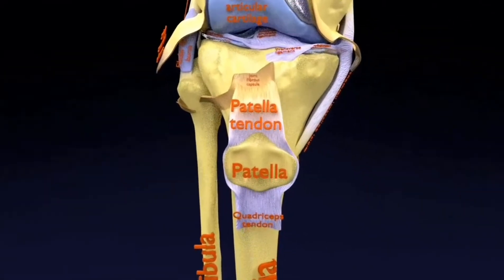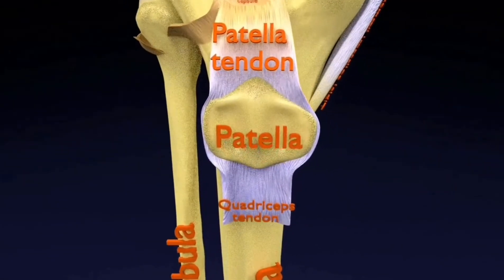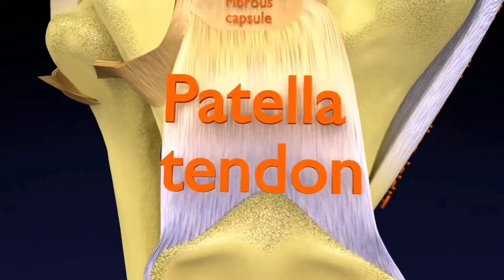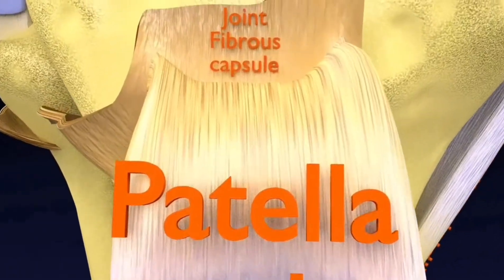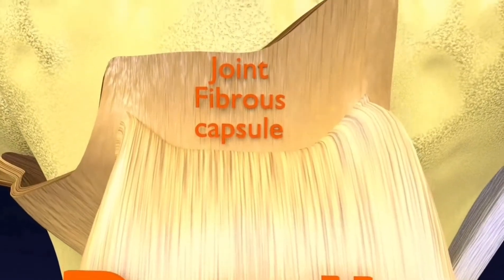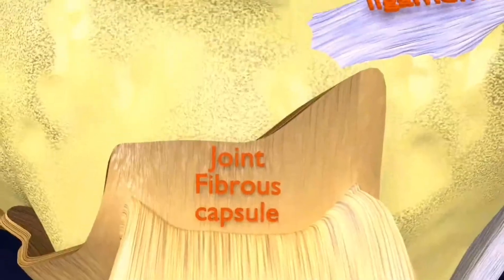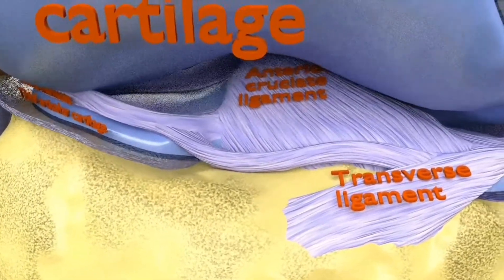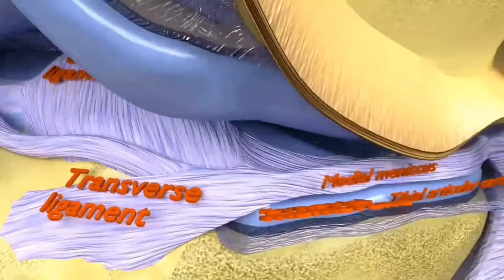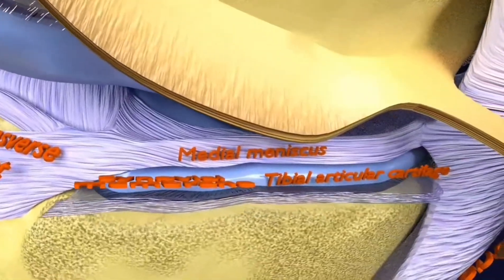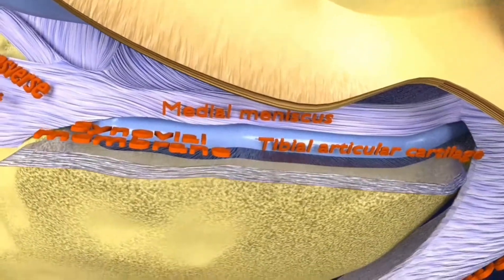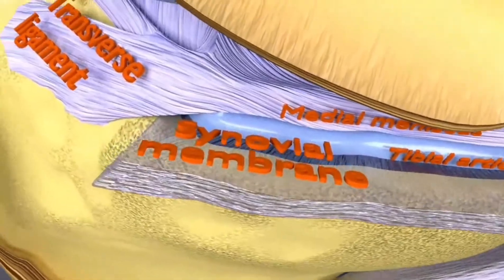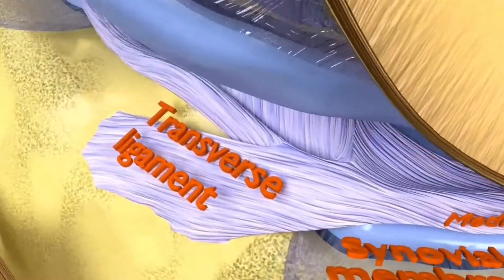Behind, the synovial membrane is attached to the margins of the two femoral condyles, which produces two extensions similar to the anterior recess. Between these two extensions, the synovial membrane passes in front of the two cruciate ligaments at the center of the joint, thus forming a pocket directed inward.